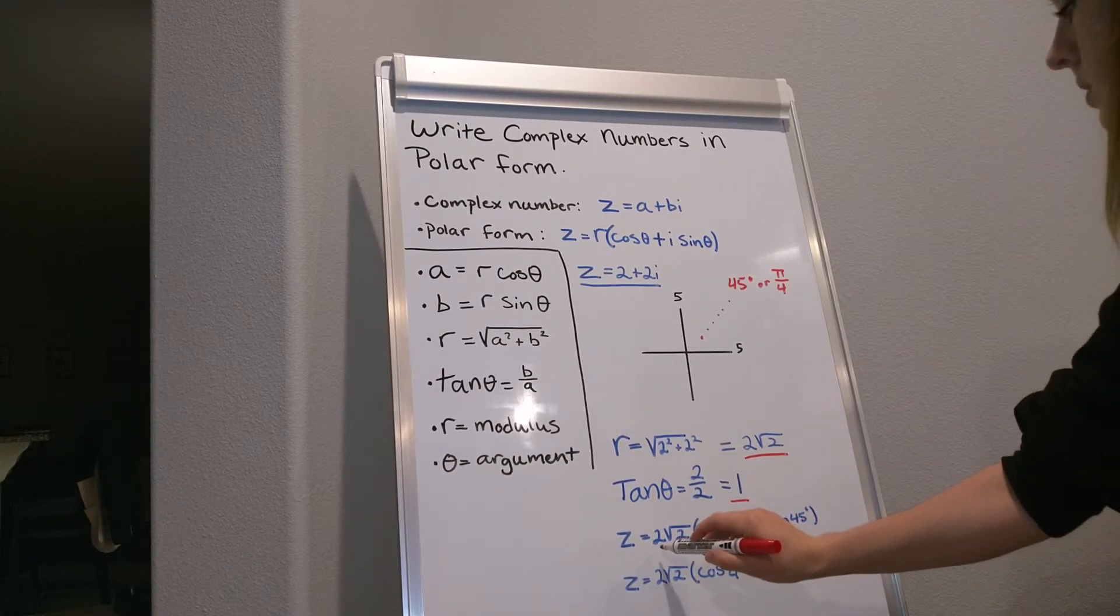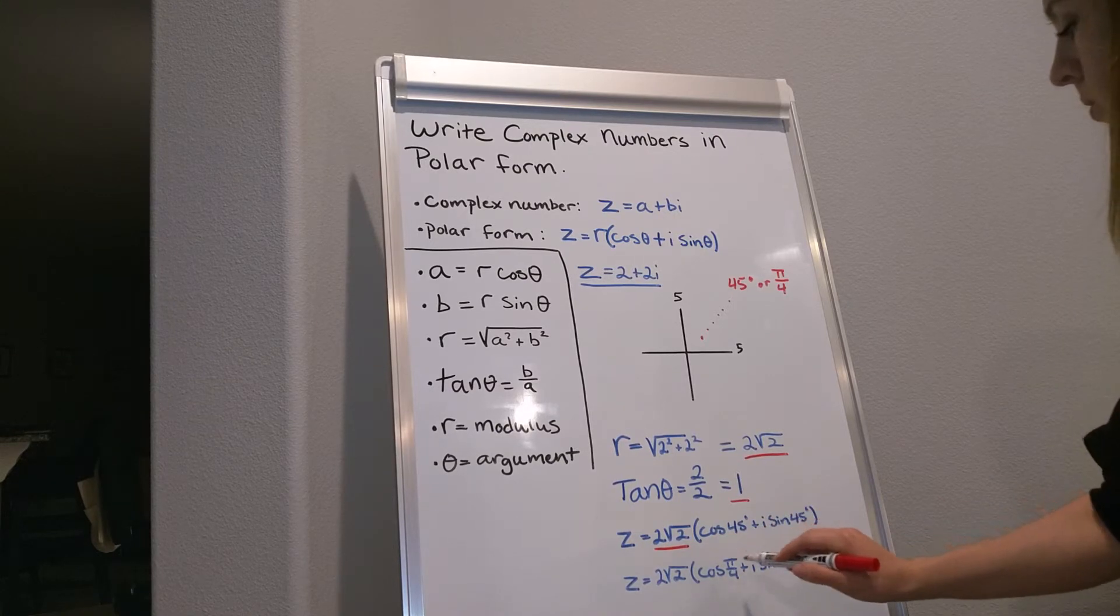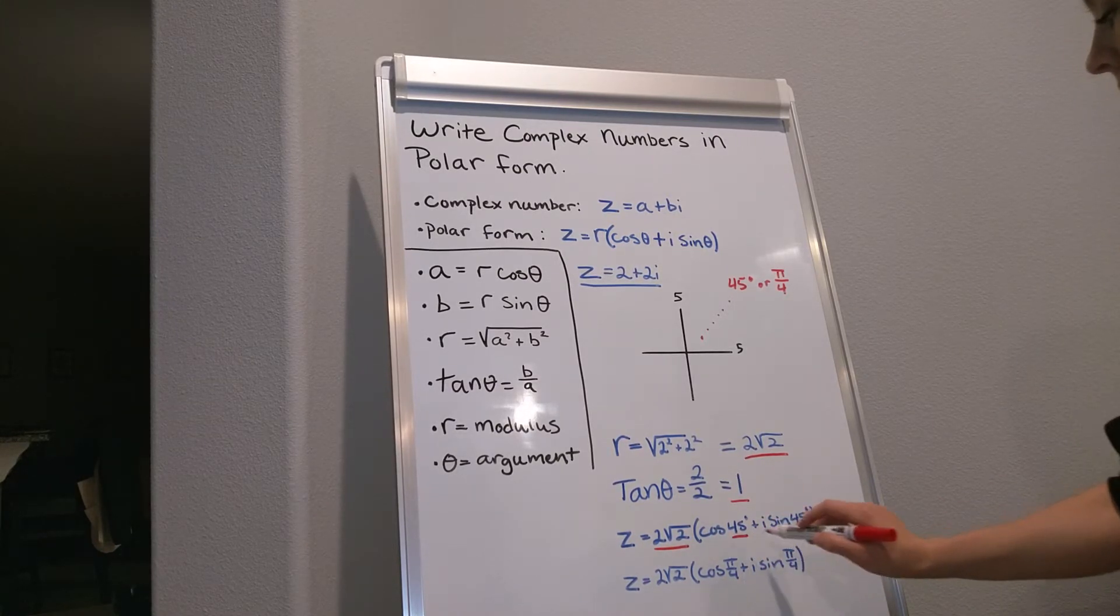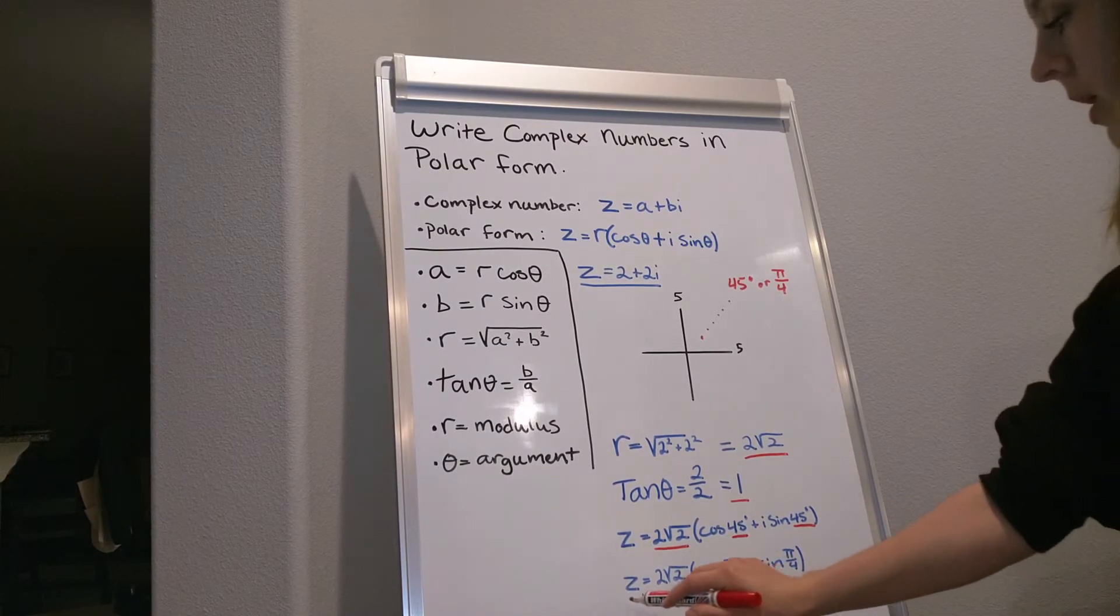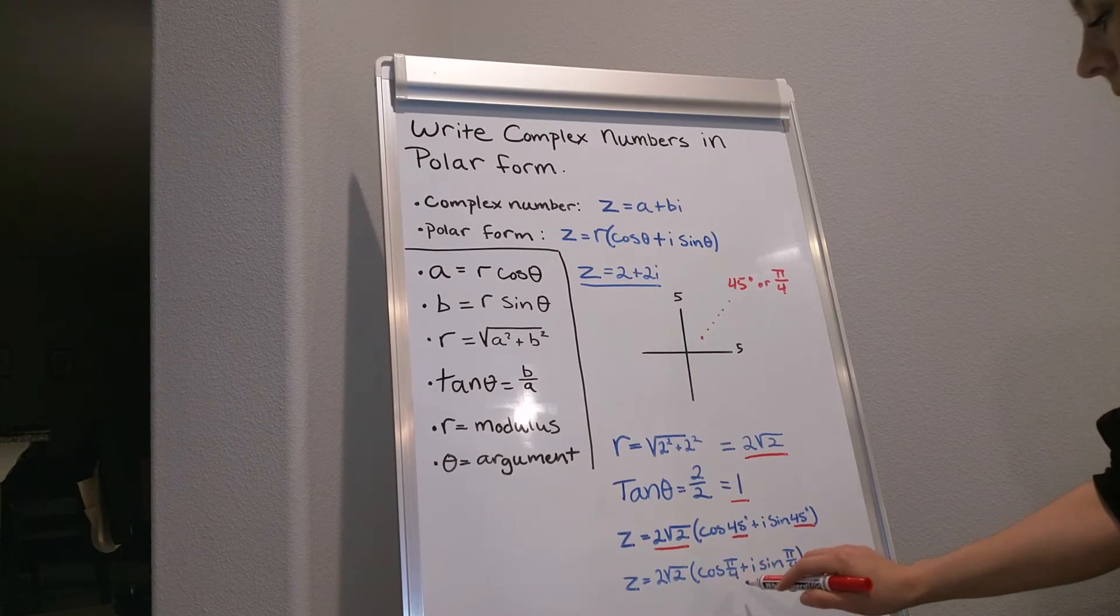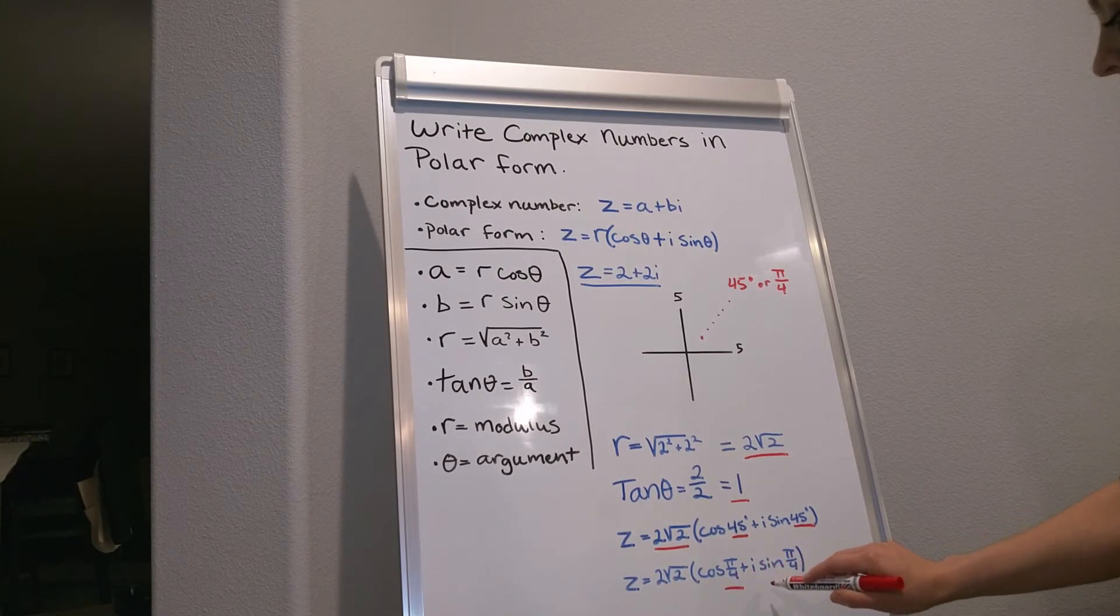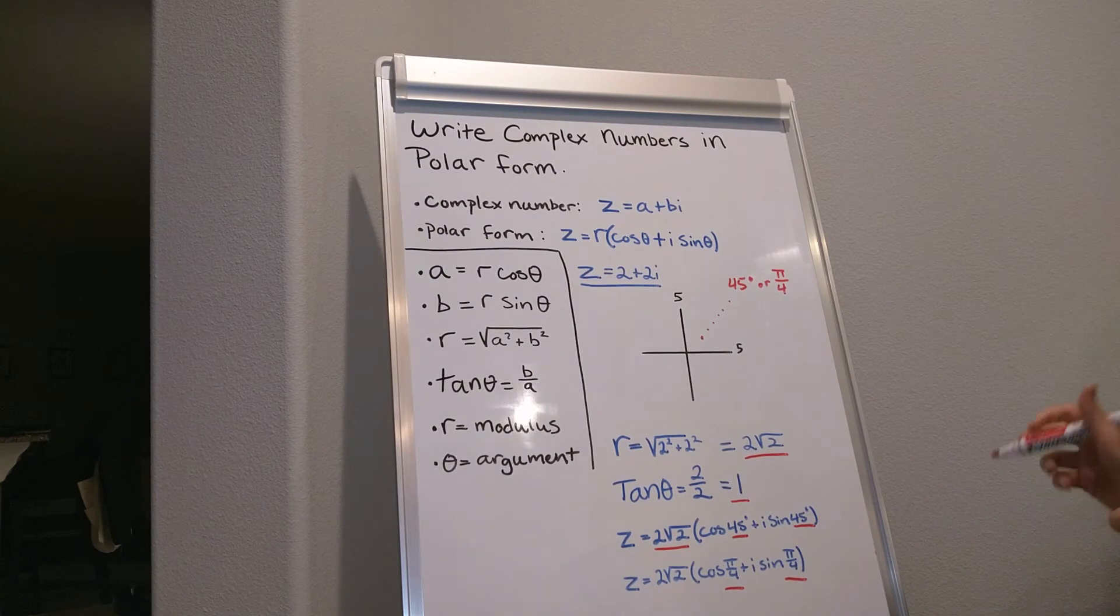Which gives us z equals 2 square root 2 cosine 45 degrees plus i sine 45 degrees, or z equals 2 square root 2 cosine pi over 4 plus i sine pi over 4. And that is how you write complex numbers in polar form.